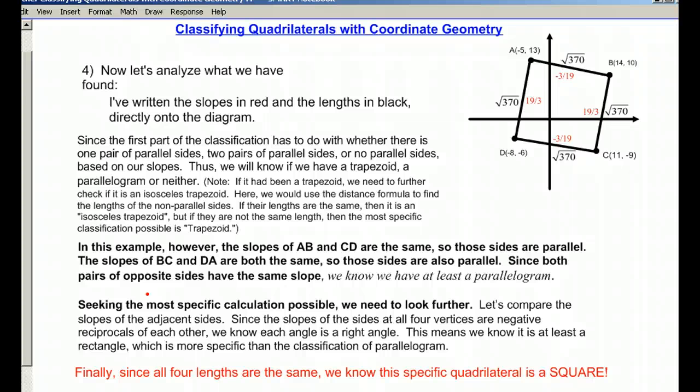Now it is time to analyze the situation. As you can see, I've written in all the slopes inside the sides and all the lengths outside. Basically, we've already concluded that we have at least a parallelogram. As far as seeking the most specific calculations possible, do you notice that these slopes right here are negative reciprocals of each other, and likewise here and here and here and here. So what we have are four right angles.